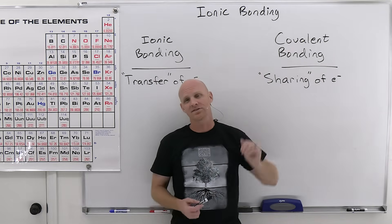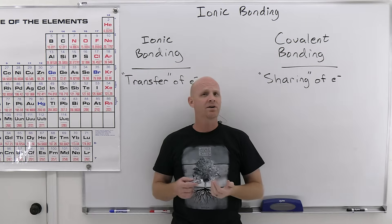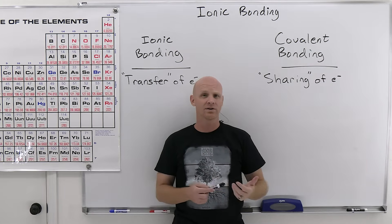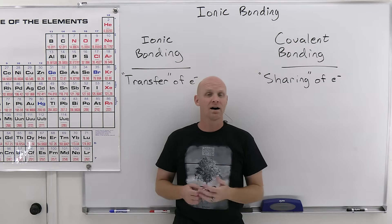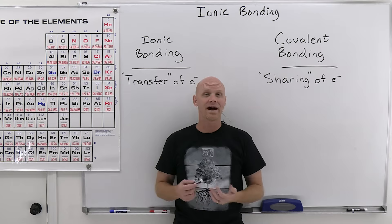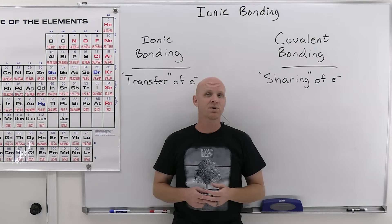Ionic bonding is going to be the topic of this lesson, and we'll start off with a little comparison and contrast of ionic and covalent bonding. Then we're going to spend a little time talking about what's called lattice energy, which is a measure of the strength of an ionic bond.